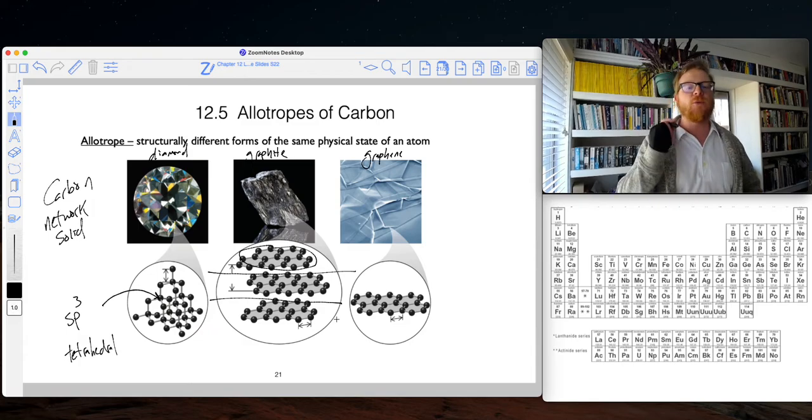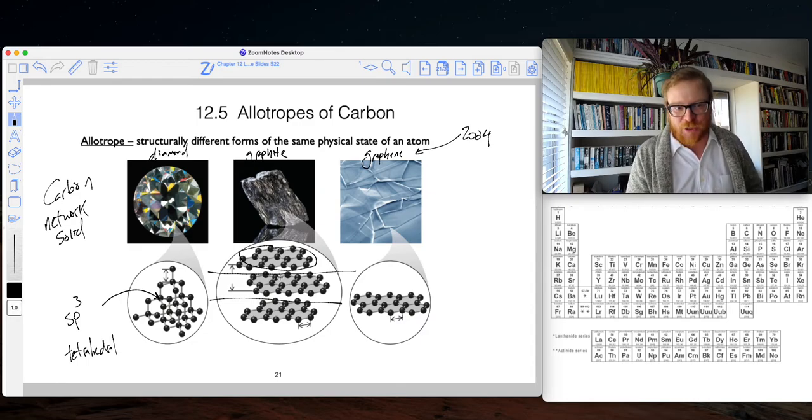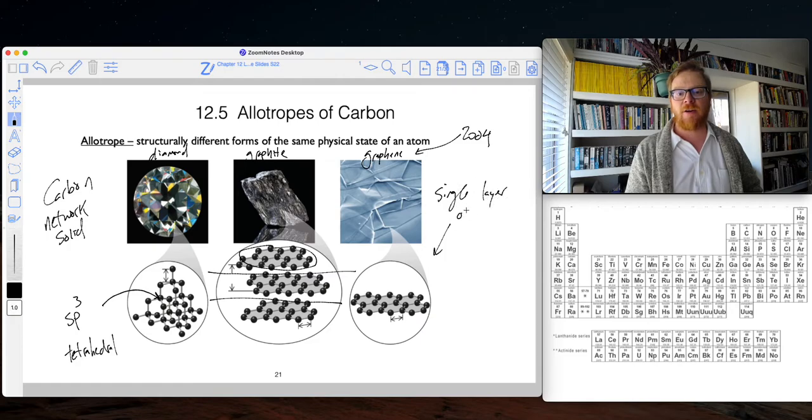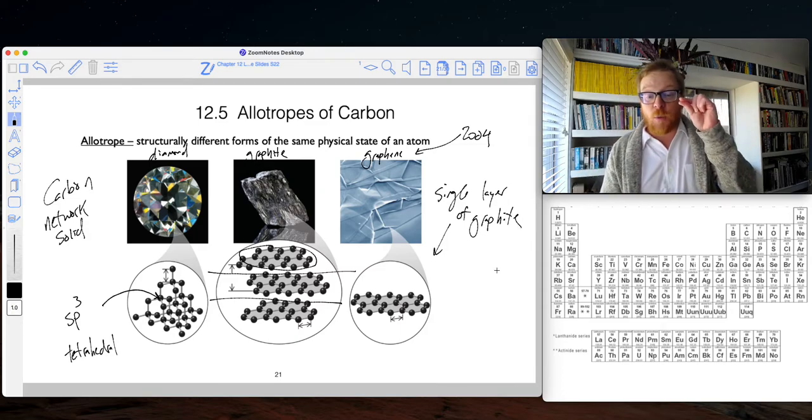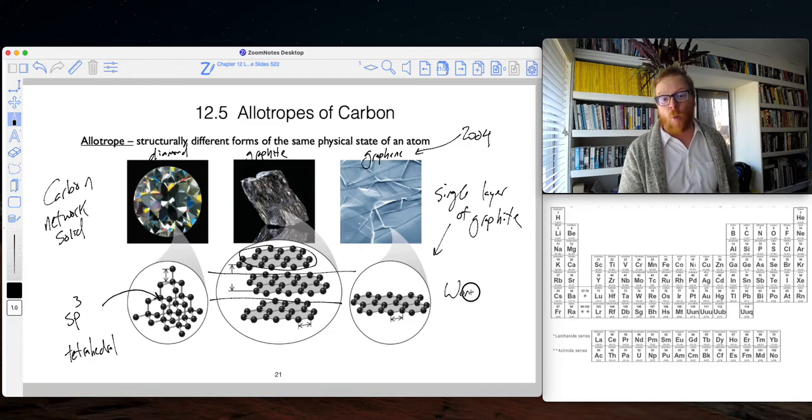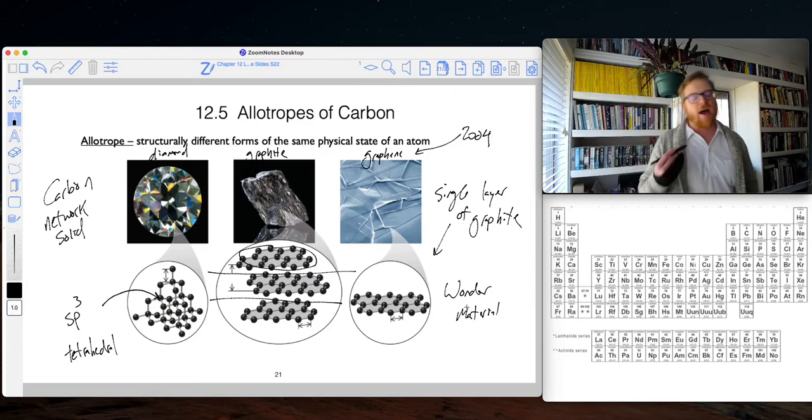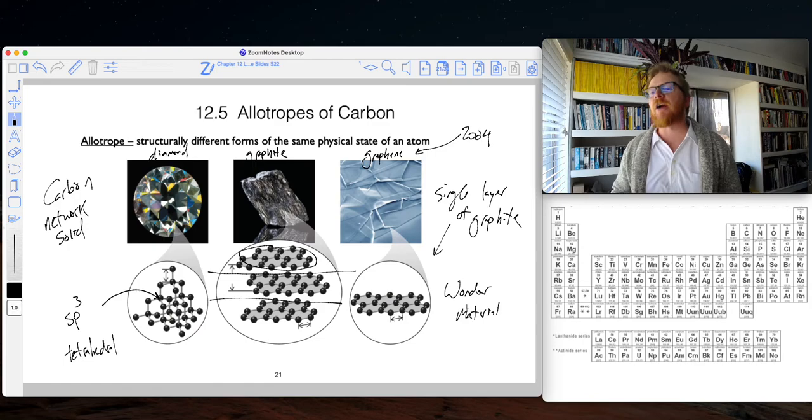What's really amazing, as recent as 2004, scientists figured out how to isolate a single sheet of graphite, which we call graphene. So that's a single layer of graphite. And what I mean by a single layer, it is literally one atom thick. So this has been noted as a wonder material. And I have another video for you to watch that's going to tell you about all of these amazing properties of graphene.